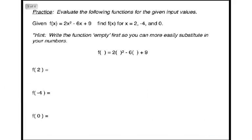Here's a practice problem for you. Evaluate the following functions for the given input values. Given f(x) = 2x² - 6x + 9, find f(x) for the input values of 2, negative 4, and 0.